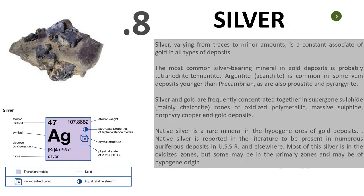Number eight is silver. Silver and gold are like husband and wife. When you are talking about gold, you are going to look for silver elements. You will see traces to minor amounts of silver most of the time associated with gold. Native silver is a mostly rare mineral when it comes to gold association. Silver and gold are frequently concentrated together, mostly in supergene sulfide zones — oxidized regions, polymetallic, massive sulfide, porphyry copper, or other gold deposits.